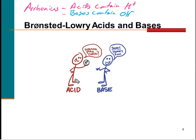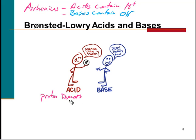In the Bronsted-Lowry definition, an acid is a proton donor — like saying 'hey, do you want to take this hydrogen?' Acids are proton donors. Remember, protons are hydrogen ions, so they're hydrogen ion donors. The acid is passing off a hydrogen ion.